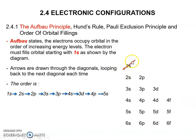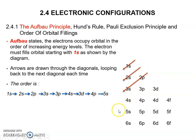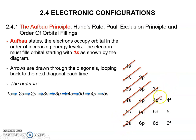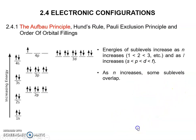The lowest energy level is 1s, followed by 2s. Then the arrow goes through 2p and 3s, continues with 3p and 4s, then 3d, 4p, and 5s. Continuing: 4d, 5p, and 6s, followed by the next row.